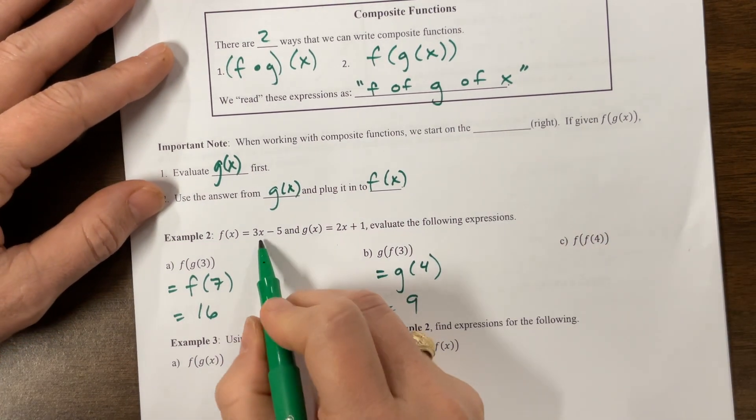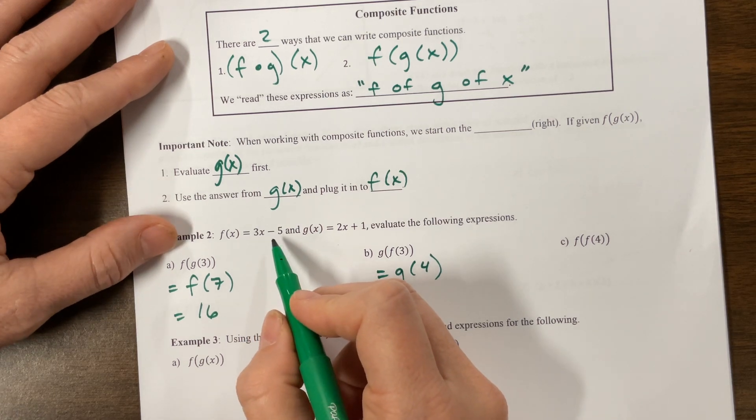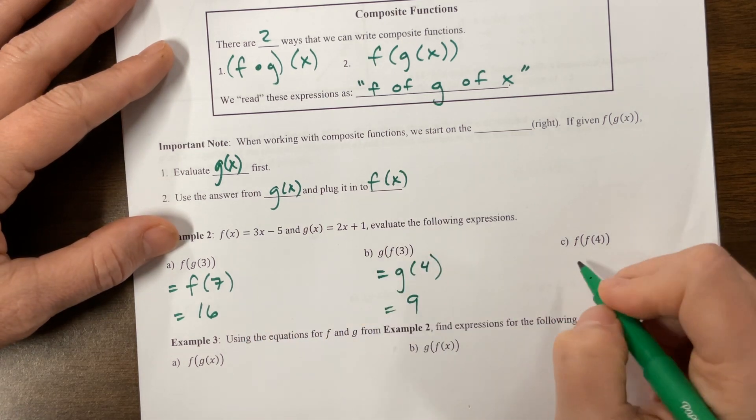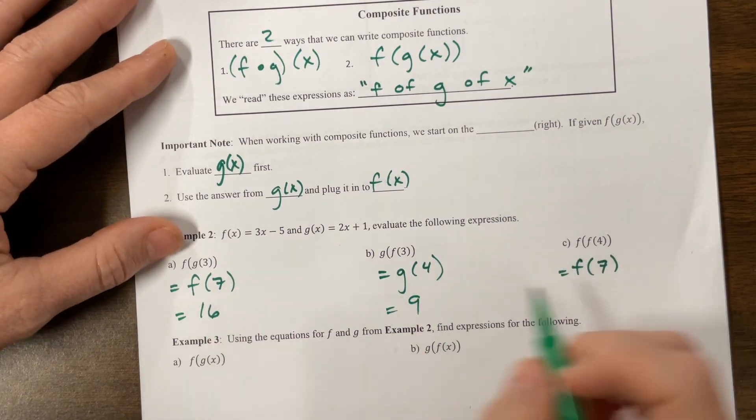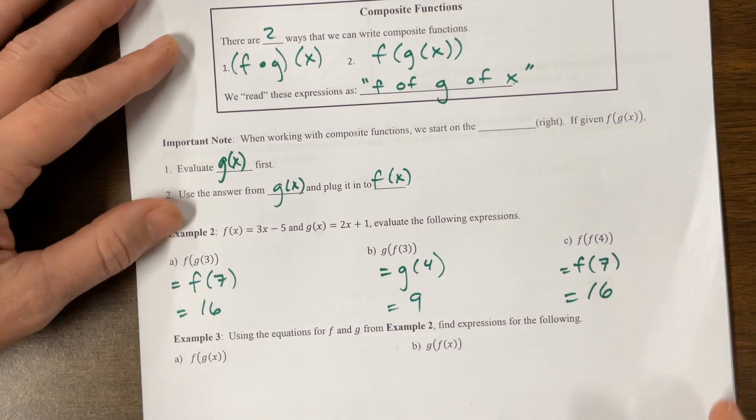F of f of 4. Let's plug in 4. I get 12 minus 5 is equal to 7. So this will be equal to f of 7. Plug in 7. 21 minus 5, we already did that. That's 16.